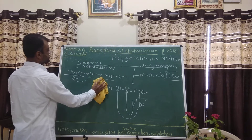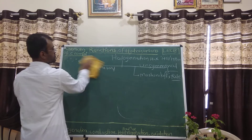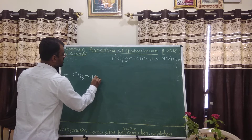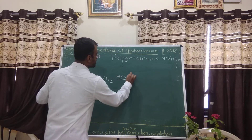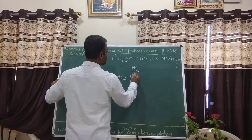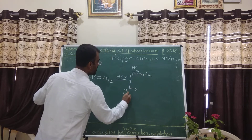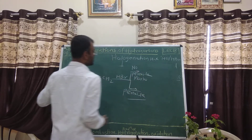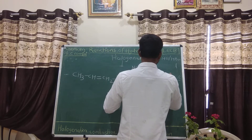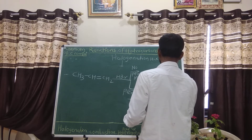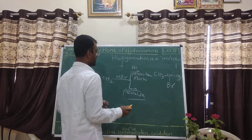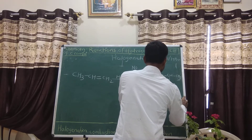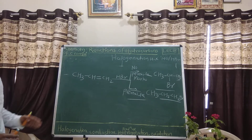Let us write this reaction in detail. When CH₃CH=CH₂ is reacted with HBr — one case without peroxide and one with peroxide. Without peroxide, it follows Markovnikov's rule: the positive part (H) goes to CH₂ and the negative part (Br) goes to the middle carbon which has fewer hydrogen atoms. With peroxide, the product is CH₃CH₂CH₂Br — the straight-chain alkyl halide. Is it clear, friends?